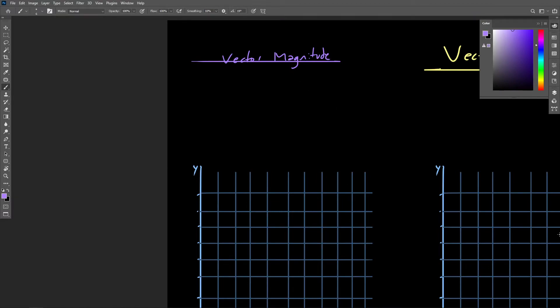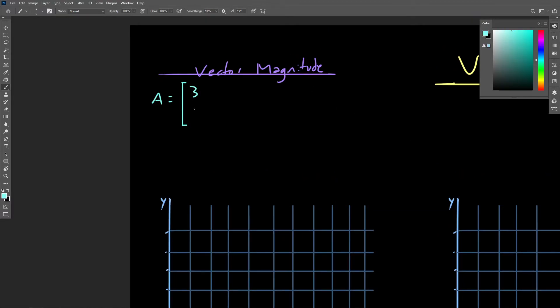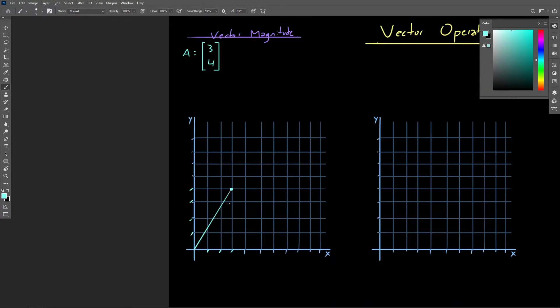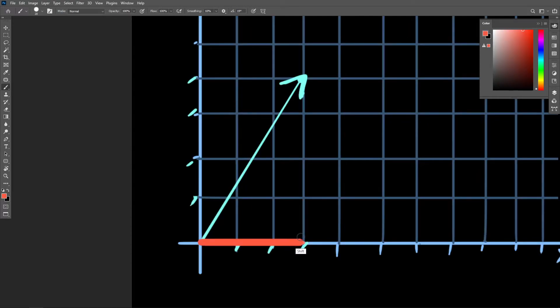Finding a vector's magnitude is an essential calculation and is performed frequently in computer graphics. To find a vector's magnitude, we need to think of its components as the legs of a right triangle. Visually, we can see that the vector covers the length of the right triangle's hypotenuse. Therefore, we can calculate the length using the Pythagorean theorem.